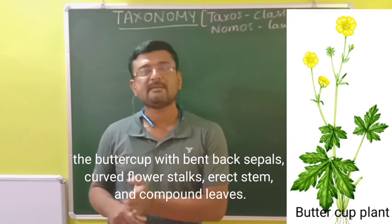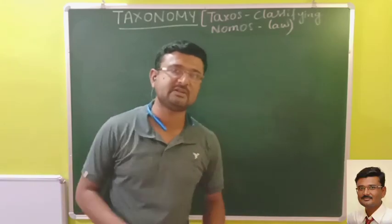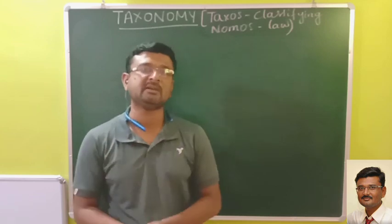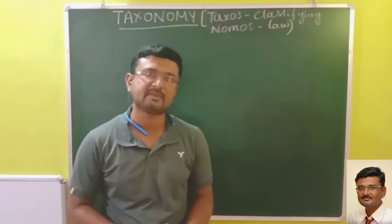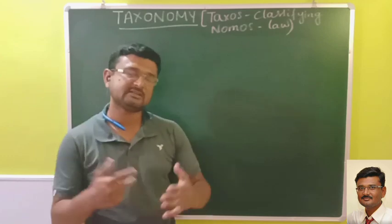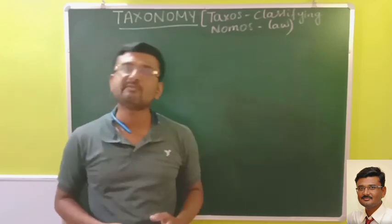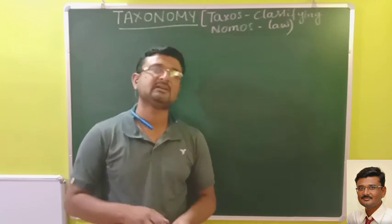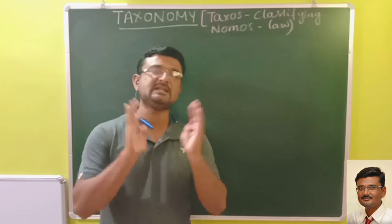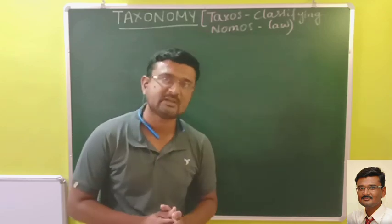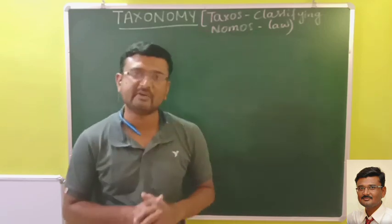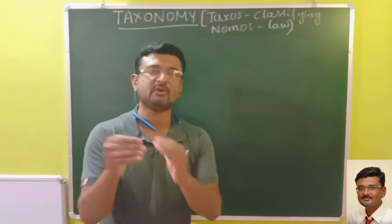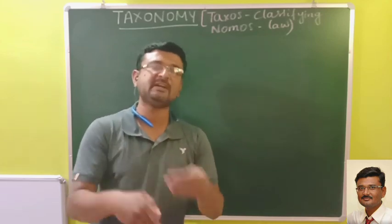Before binomial nomenclature, polynomial nomenclature used a huge number of words for one species — the entire description of a plant or animal. For example, the buttercup's polynomial name was: Ranunculus calicibus retroflexus pediculis falcatis caulis erectus foliis compositis, meaning the buttercup with bent-back sepals, covered flower stalks, erect stem, and compound leaf. That entire description was the name. We couldn't have remembered even a few such names, so binomial nomenclature replaced it.